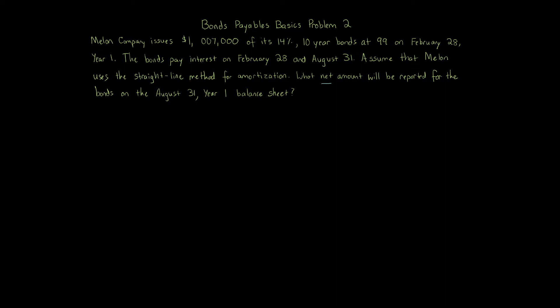What is the net amount that will be reported for bonds on the August 31st, year 1 balance sheet? We're told about the $1,007,000 of bonds — 14%, 10-year bonds at 99. Now think about the balance sheet: assets equals liabilities plus owner's equity. When Mellon Company issues bonds, those go under the liabilities as bonds payable.